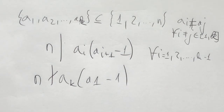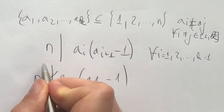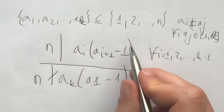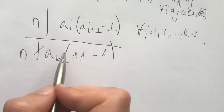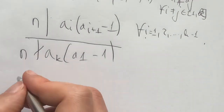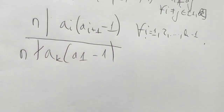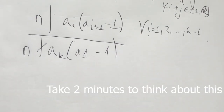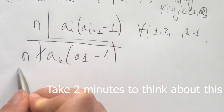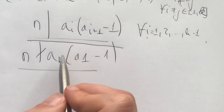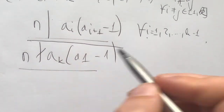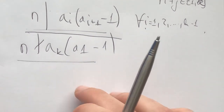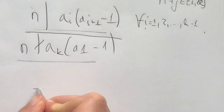Before I go into the proof I would like to take a big picture view: what does it mean for n to divide ai times ai+1 minus 1 for i from 1 to k minus 1, and what does it mean for the problem statement to not hold — for n to divide ak times a1 minus 1? I suggest you take two minutes to think about what is the difference between this condition holding and this thing being true as well.